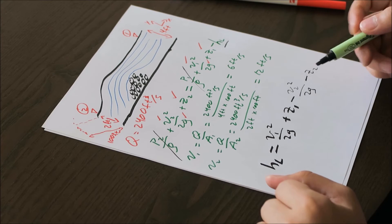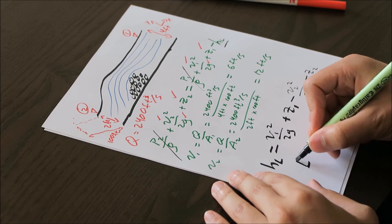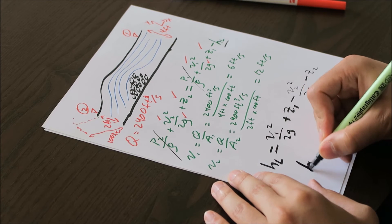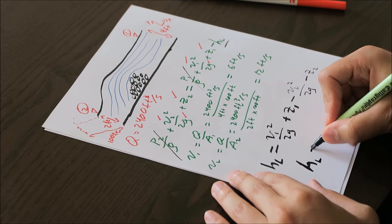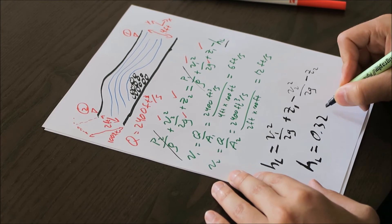And we have everything that we need now, because we did solve for our V1 and our V2. And we can plug in all those terms, and we will find that our head loss equals 0.32 feet.